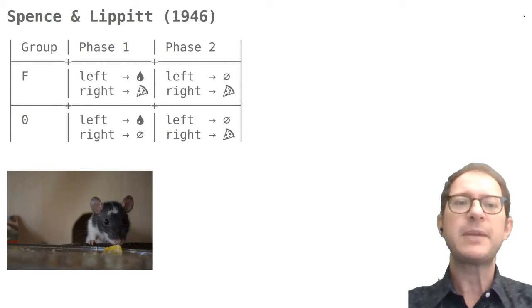Accordingly, they set up an experiment where the rats had to make a single choice between left and right. The experiment had two groups of rats, and each group was trained in two phases.